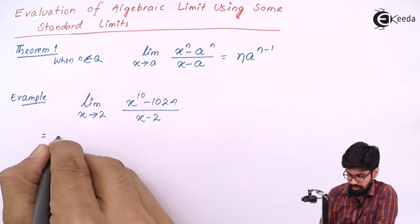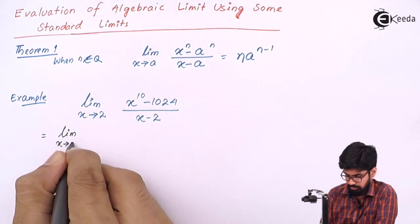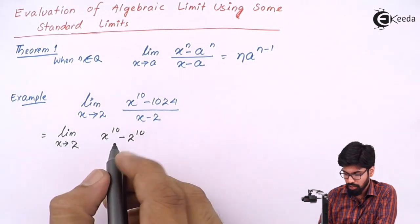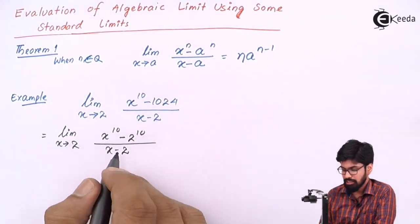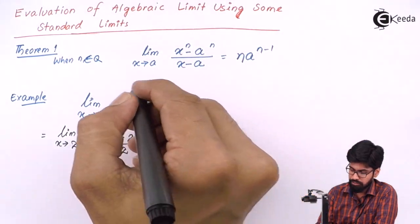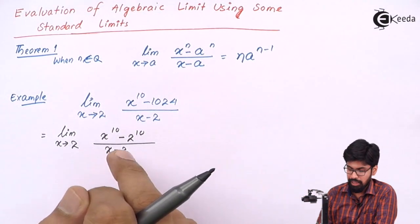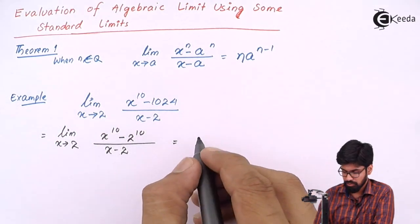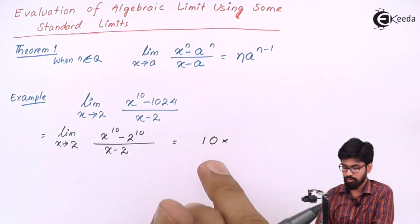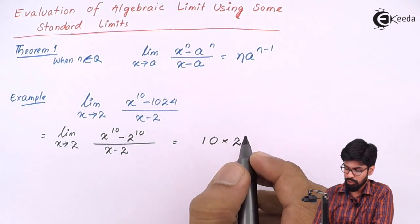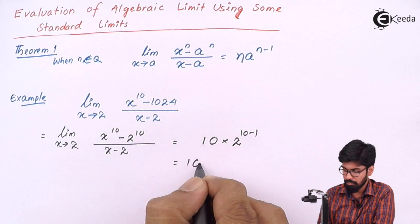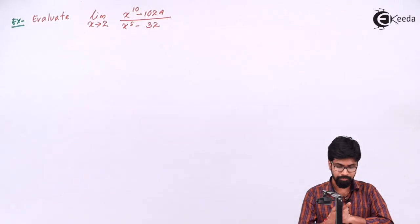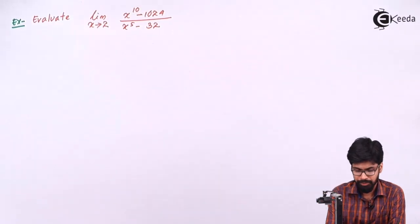Here we can write the question as x raise to 10 minus 2 raise to 10, which equals 1024, upon x minus 2. This is in the same form as the theorem, so the formula gives n multiplied by a raise to n minus 1. Here n equals 10 and a equals 2, so 10 multiplied by 2 raise to 9. This is our final answer.